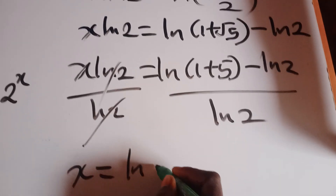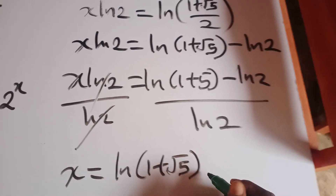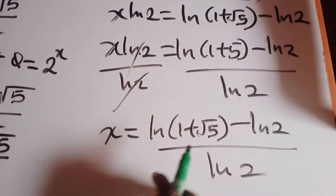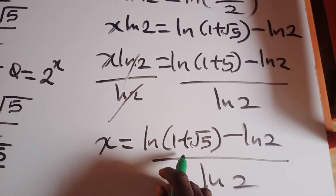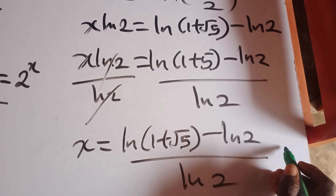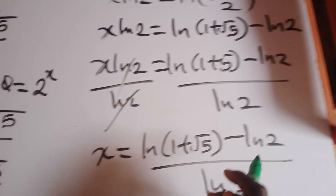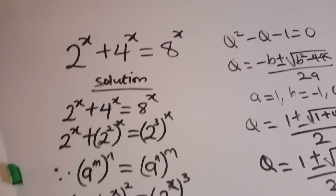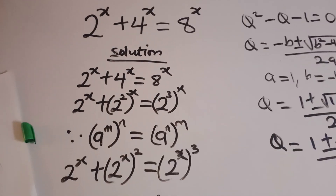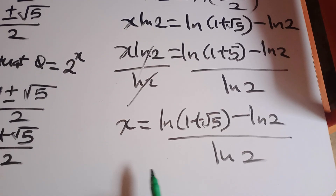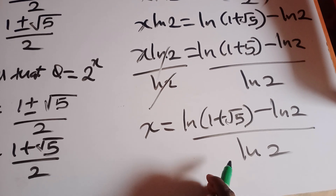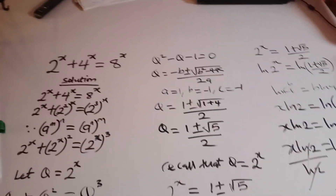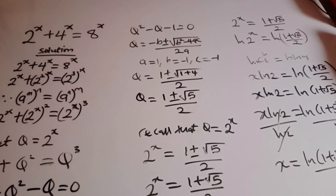Using a calculator to evaluate ln(1 plus square root of 5) minus ln(2), divided by ln(2), and substituting that value of x back into 2 raised to the power x plus 4 raised to the power x equals 8 raised to the power x will confirm the correct answer. That is the value of x: ln(1 plus square root of 5) minus ln(2), divided by ln(2). Thank you for watching — don't forget to subscribe and share this video.